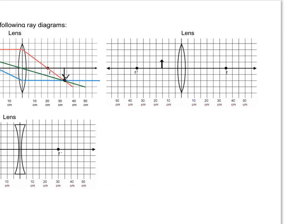Moving on to our next situation, we have another converging lens, but now the object is inside the focal length. Our first ray goes in parallel and out through the focus. Our second ray goes in through F', but when F' is behind the lens, we start with F', go up to the top of the object, and then go out parallel. Our third ray goes directly through the center. We trace back these three rays — they don't converge directly — and we find that those rays converge at a point behind the lens. We draw the image of our object at that point.